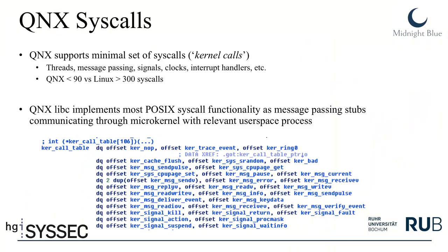QNX also supports syscalls, but not as many as Linux with its 300-plus syscalls — QNX has fewer than 90. QNX is POSIX-compatible, meaning you can use standard libc functions in your code, but here you use a specific QNX compiler which converts those libc function calls into message-passing stubs.